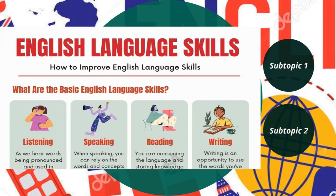Throughout our learning journey we're going to focus on five basic English skills. The skills are listening, speaking, reading, and writing. Listening is the ability to decode the meaning of an audio string. Speaking is the ability to encode thoughts and concepts into oral form. Reading is the ability to decode the meaning of a written string. Writing is the ability to encode thoughts and concepts into written form.